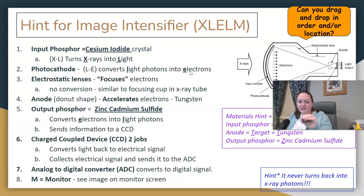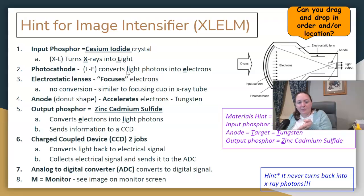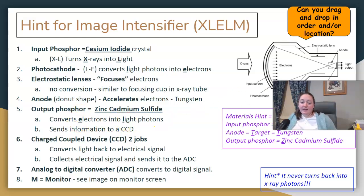The photocathode converts light to electrons — L to E. The electrostatic lenses simply focus; they don't convert anything. The anode is a donut shape made of tungsten.